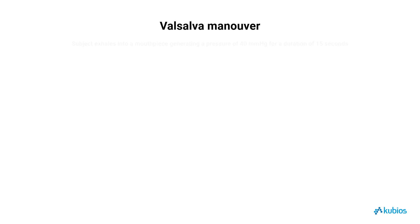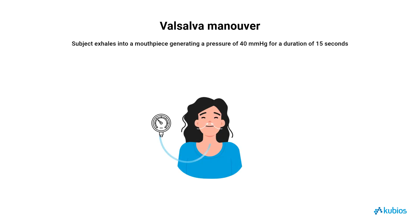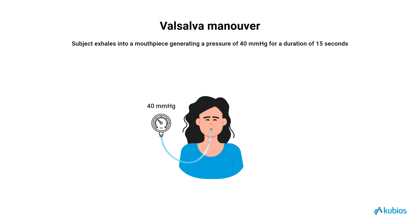The Valsalva maneuver involves the subject performing a forced exhalation against a closed airway, typically into a mouthpiece, to generate a sustained pressure of 40 mmHg for 15 seconds. This controlled maneuver provides valuable insights into Autonomic Nervous System function by allowing us to observe the characteristic heart rate response during and following the pressure phase.